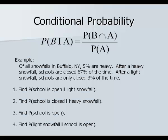Here's our example. Of all the snowfalls in Buffalo, New York, five percent are heavy. If a heavy snowfall occurs, schools close 67 percent of the time. After a light snowfall, schools close only three percent of the time. There are four probabilities we're going to find, and we're going to take them one at a time on each of the next four slides.